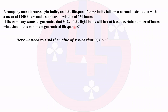Since the condition is 'at least' — meaning greater than — we need to find the value of X such that P(X > x) = 0.90. We can convert 90% to decimal, that is 0.90.